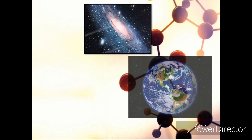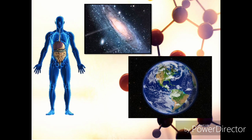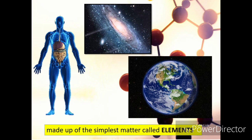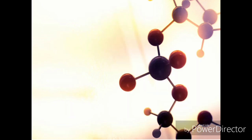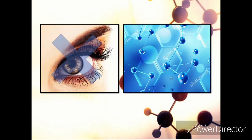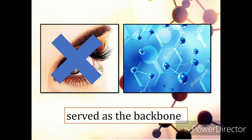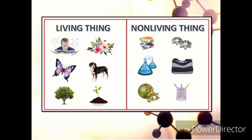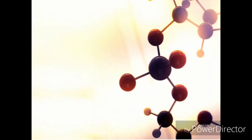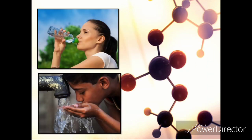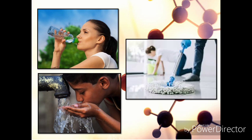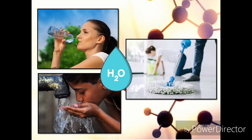The universe, our planet, and even ourselves are made up of the simplest matter called elements. We just don't notice them because not all elements can be seen by our naked eye. Just like the alphabet that serves as the backbone of words and sentences, elements are the basis of all living and non-living things. The water used in drinking, cleaning, and many other kinds of things is made up of two elements: hydrogen and oxygen.